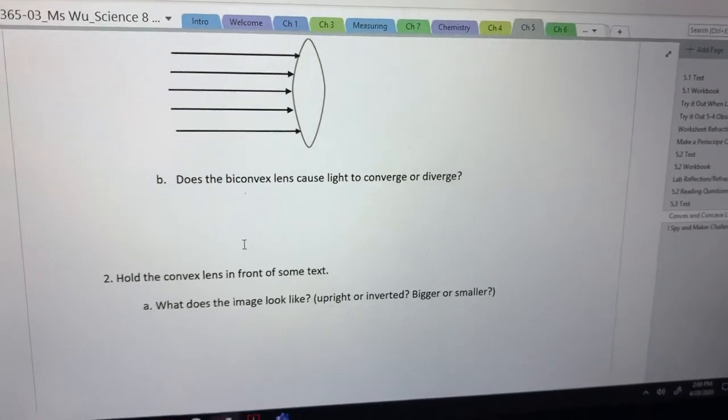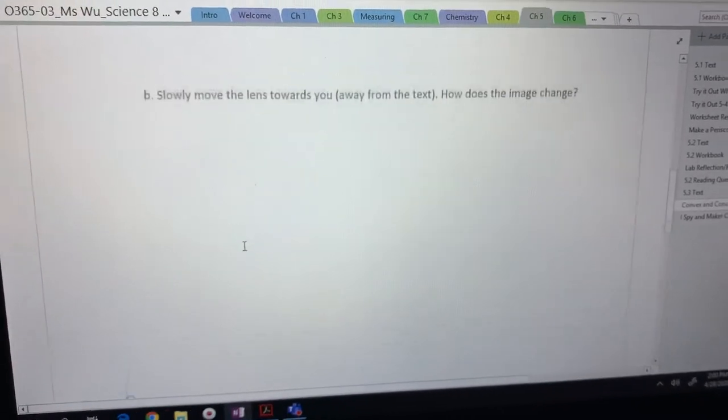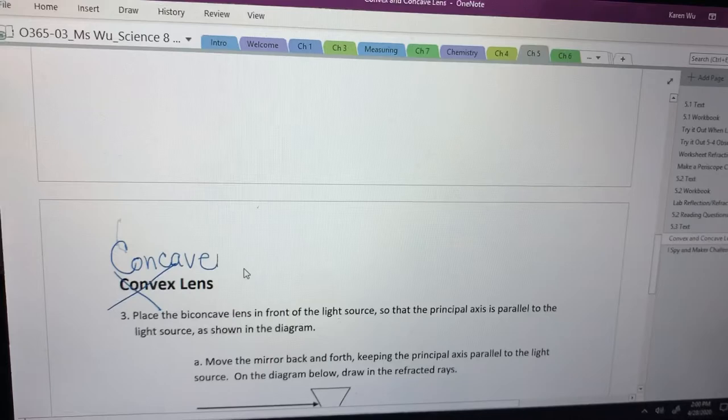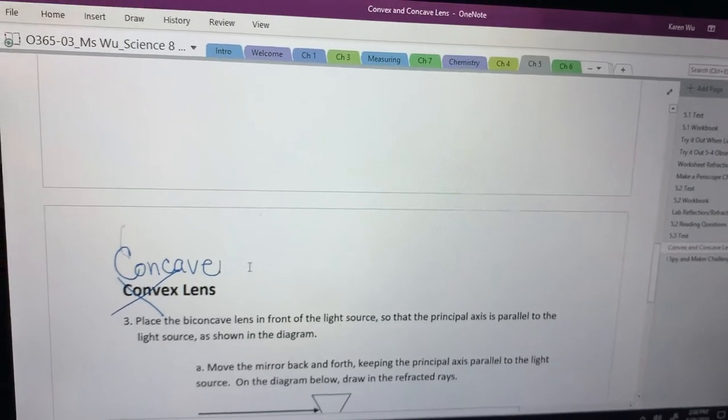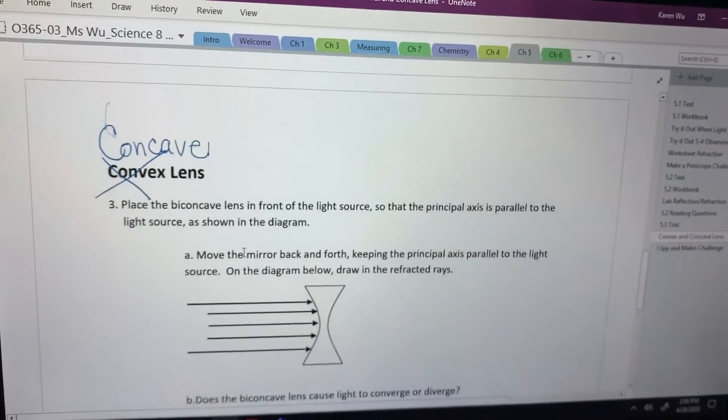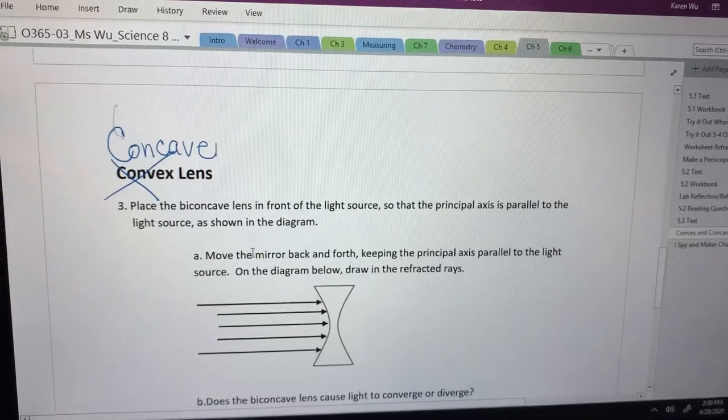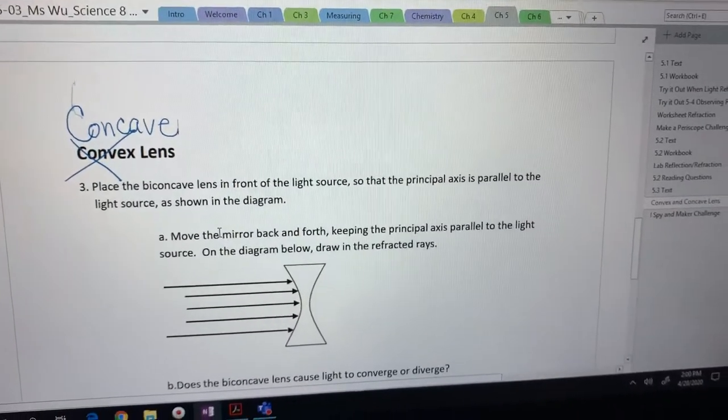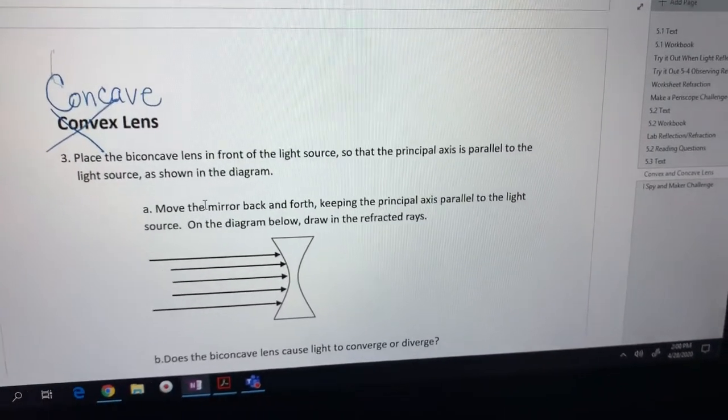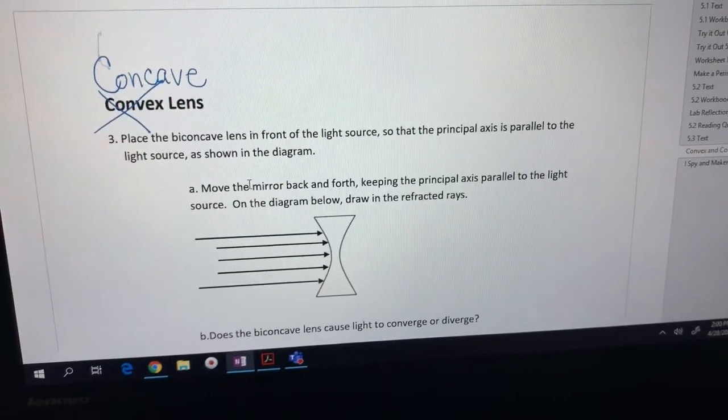Okay, so that was cool. Our convex lens. Moving on is when I realized I had a typo. Our next one is a concave lens, and in fact, a bi-concave lens, because it's caved in on both sides.